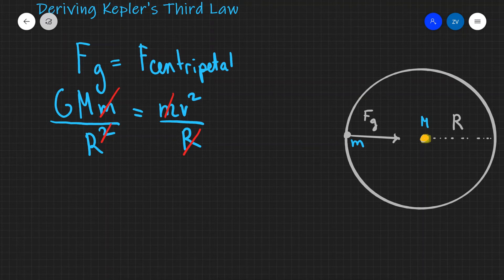A useful thing to remember is because the planet is moving in a circle we can say that the velocity of the planet will be equal to the distance traveled divided by the time because it's moving at a constant velocity. So the distance traveled will just be the circumference of the circle which is 2πr.